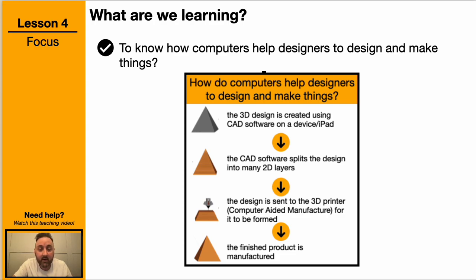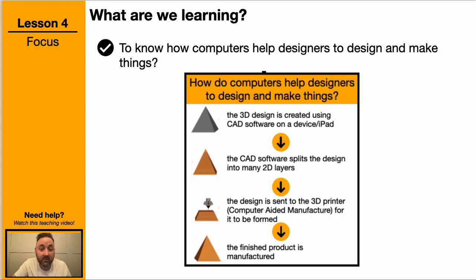Once the design is created, the CAD software splits it into 2D layers. The design is then sent to a 3D printer, which prints it using those 2D layers. When completed, your product is finished and is classed as manufactured.